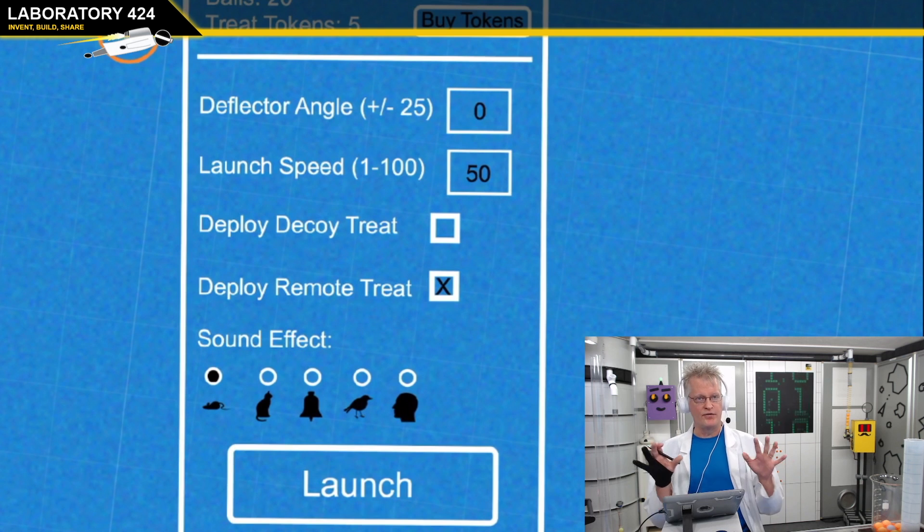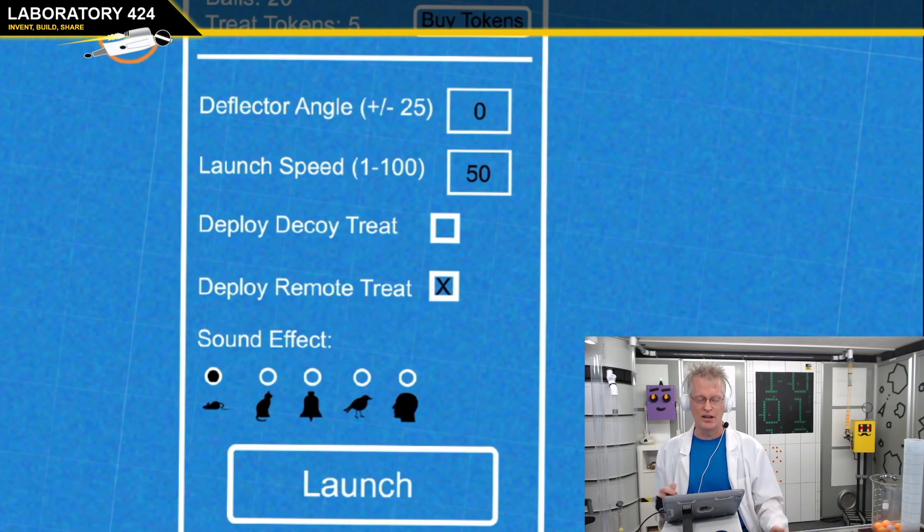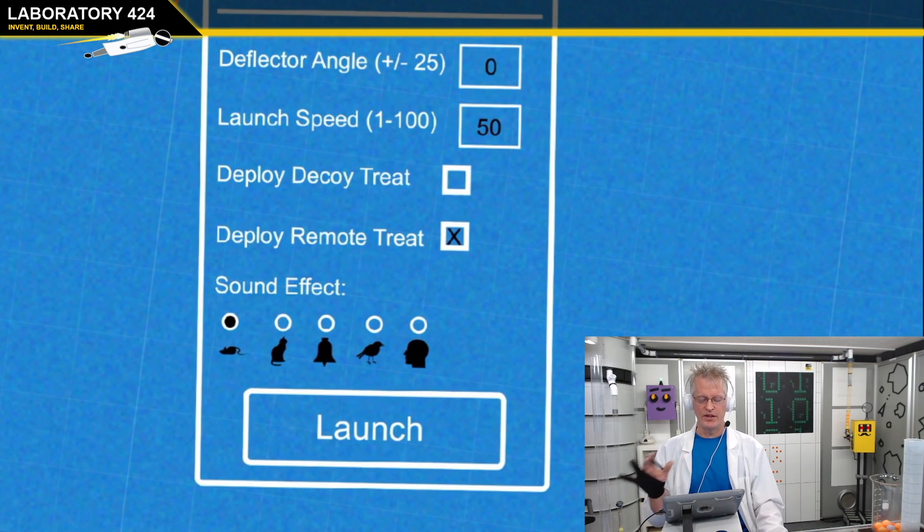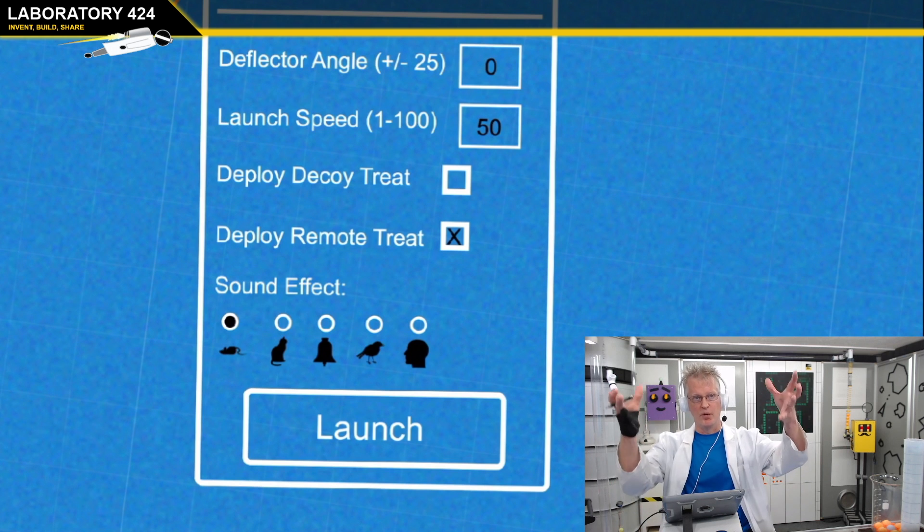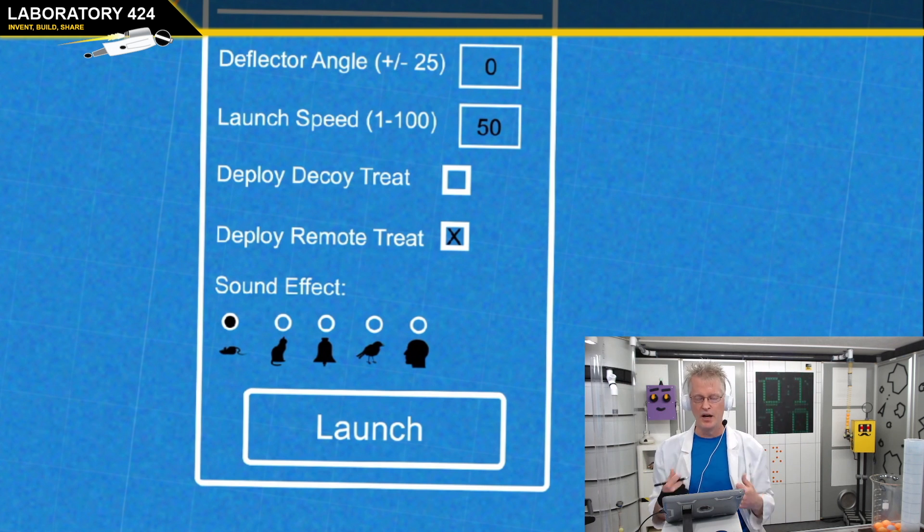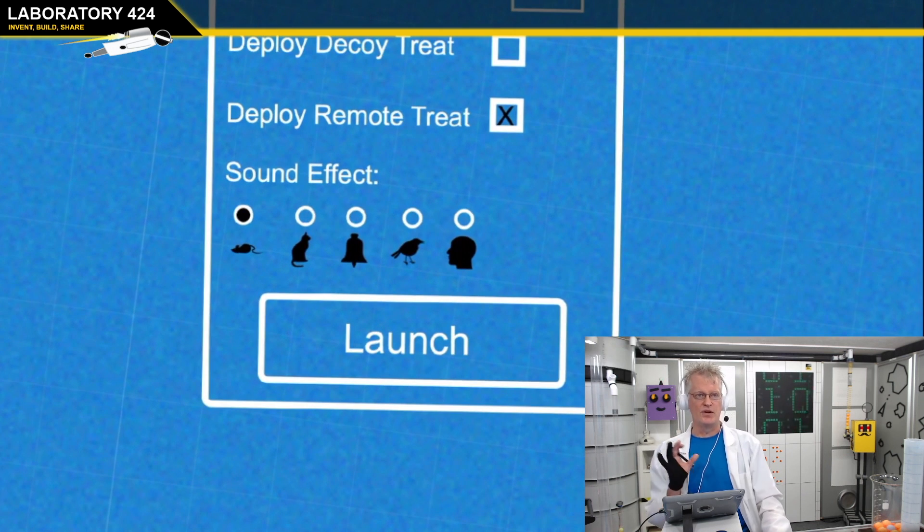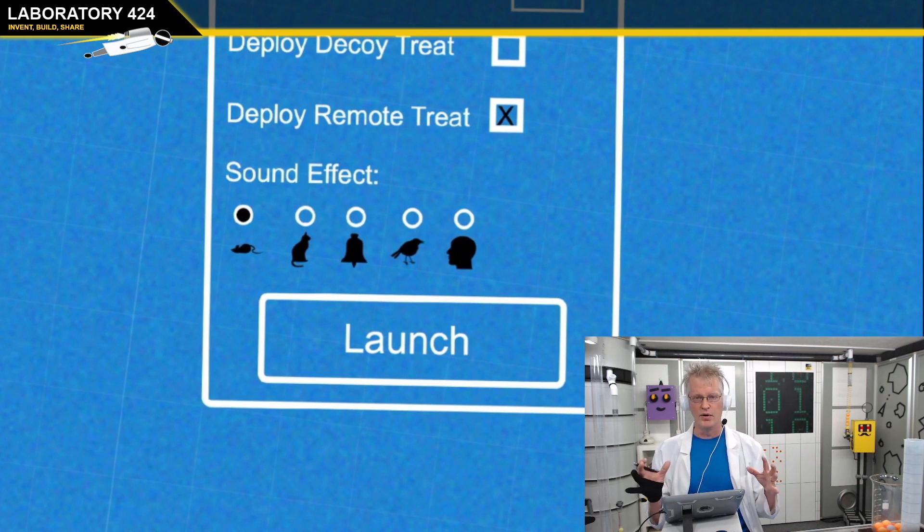So what they do is they set their shot up. They'll set the deflector angle and you'll give them a range. You set the launch speed. And of course this is very bare bones, I'd probably make it a little more graphically exciting. So they set their launch speed if you have a kinetic type launcher. And then whether to deploy a decoy treat or the remote treat.